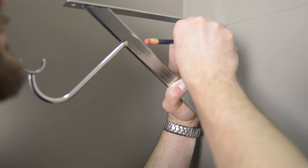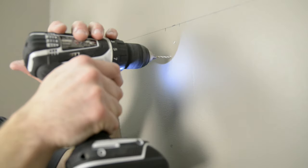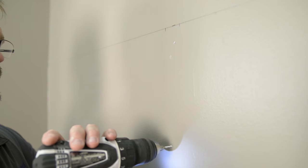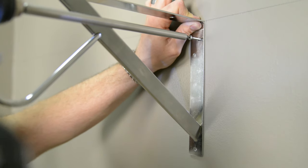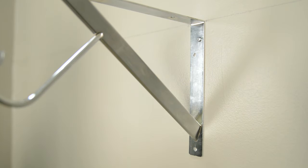Hold the support to the wall on the level line and mark the holes. Pre-drill the holes with a 3/32-inch drill bit into wood or metal studs. Use the number 8 by 1 and 1½ inch screws provided to mount the supports into the studs.